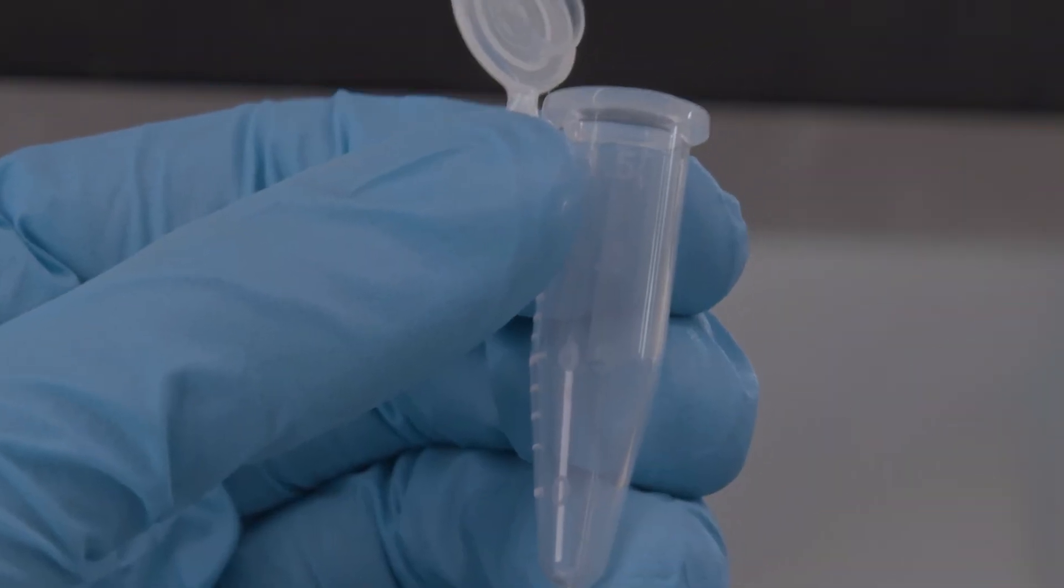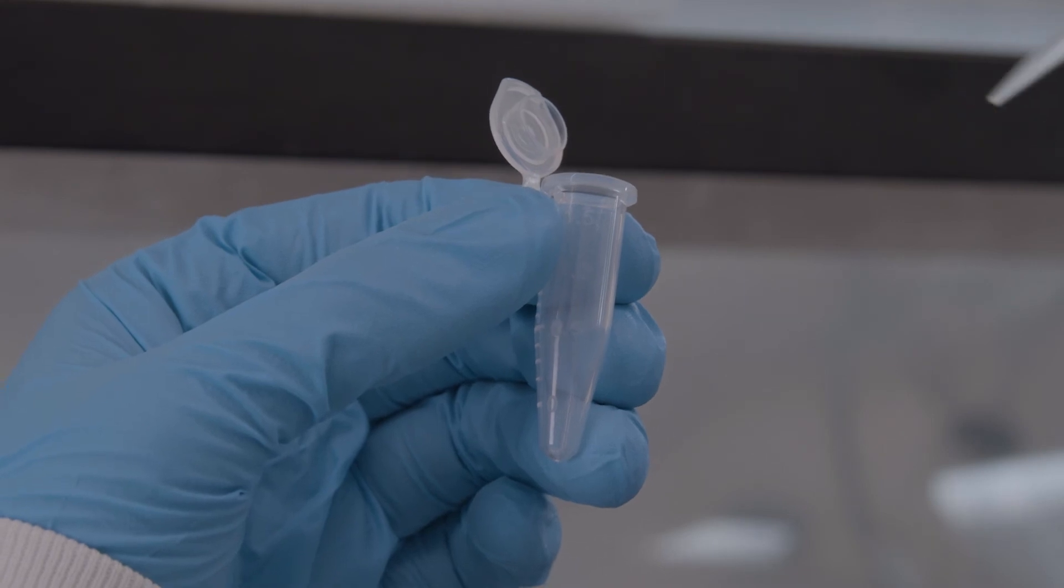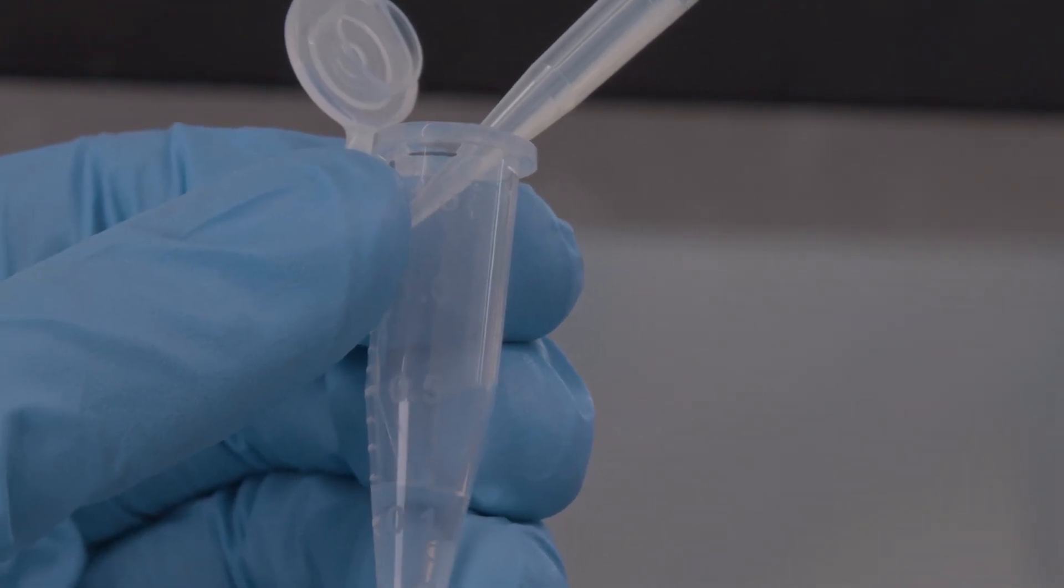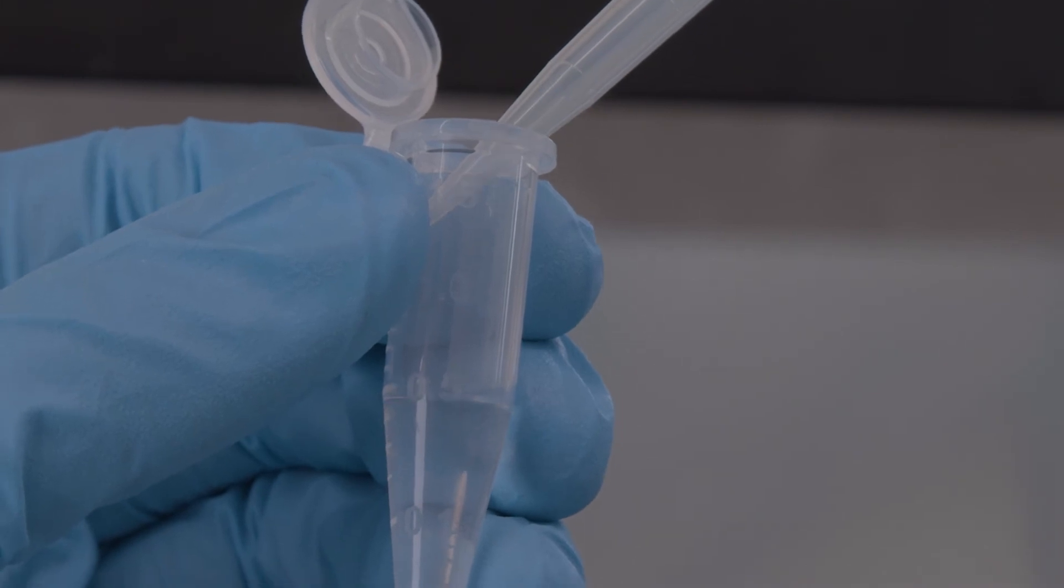If this is a new container, place the tip lightly against the side of the tube. Capillary action between the side of the tube and the liquid will help draw all of the liquid out of the tip.